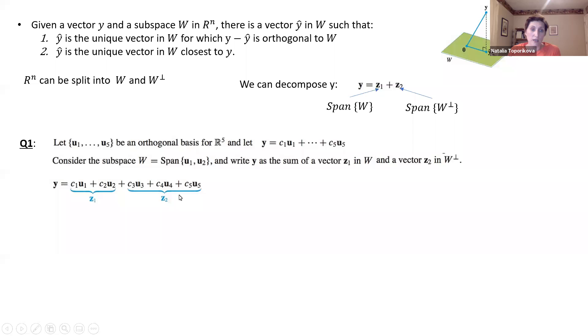The rest of the terms we combine together and call them z2. And our z1 is span of the first two vectors, u1 and u2. And z2 is spanned by the rest of the basis vectors from u3 to u5. So now our most important question is, is this component z2 coming from the complementary orthogonal space of W? In other words, is z2 orthogonal to the basis vectors u1 and u2 for W?